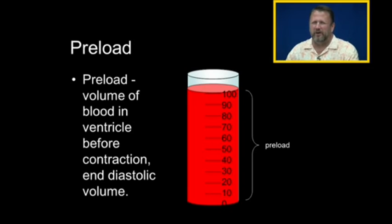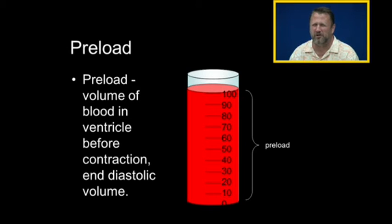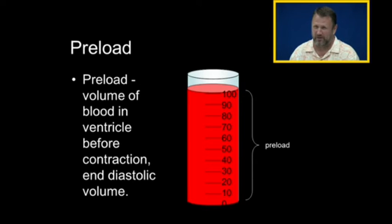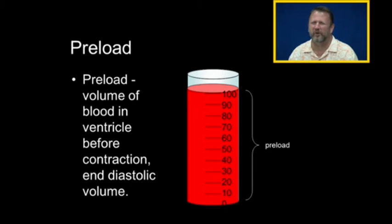For those of you who read carefully between the lines of big giant medical books: yes, the preload is technically a pressure, but in a normally compliant ventricle we can turn the preload into a volume. So clinically speaking, we think of preload as the volume of blood in the ventricle before contraction — the end diastolic volume.